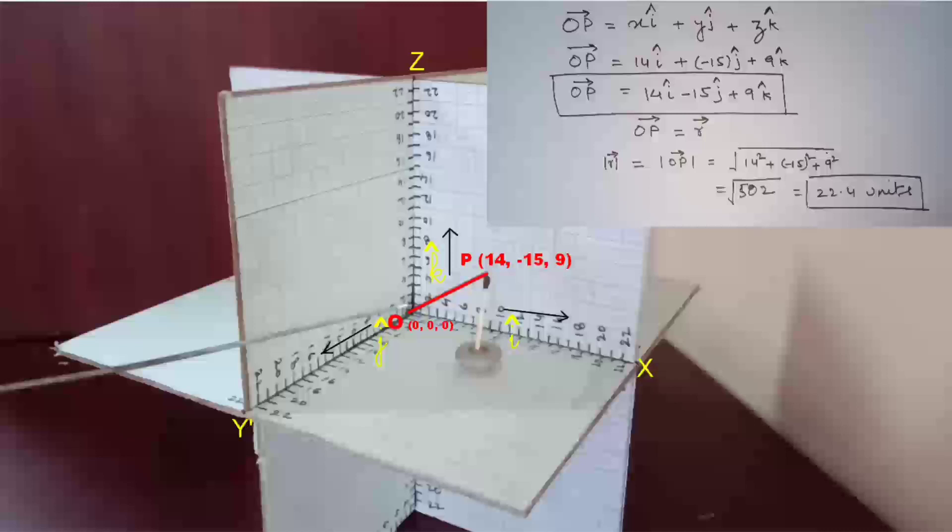And the magnitude of vector OP is under root 14 square plus minus 15 square plus 9 square. That is equal to under root 502. That is equal to 22.4 units.